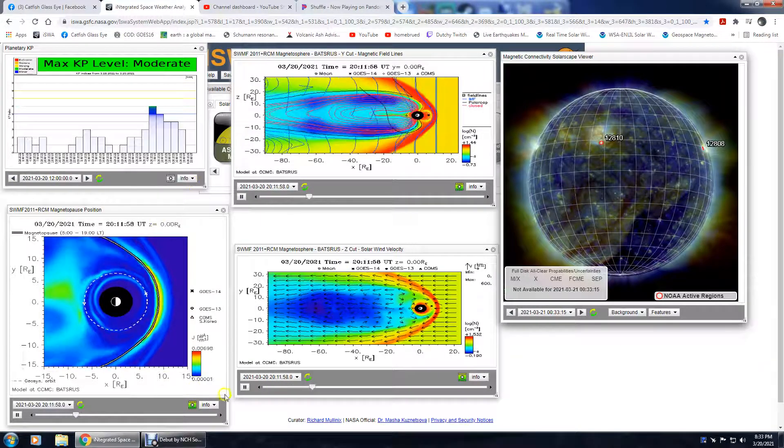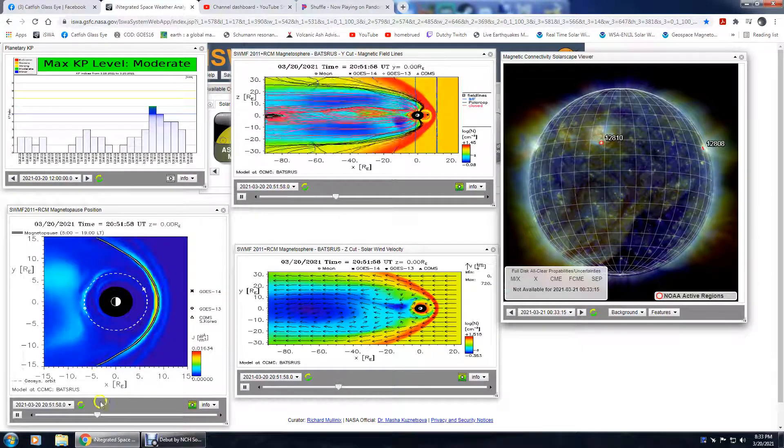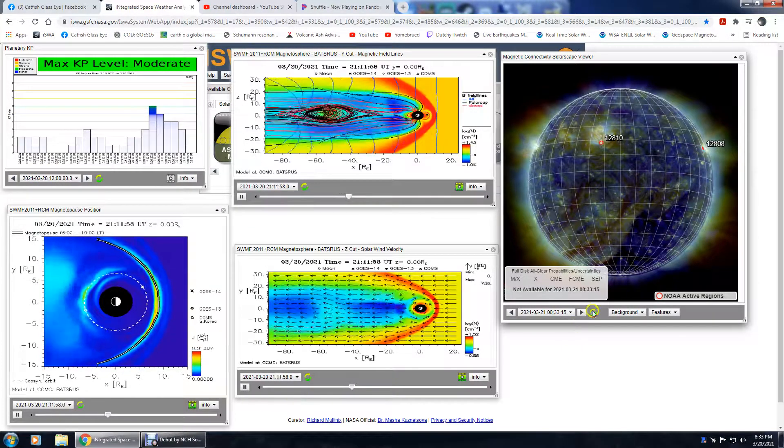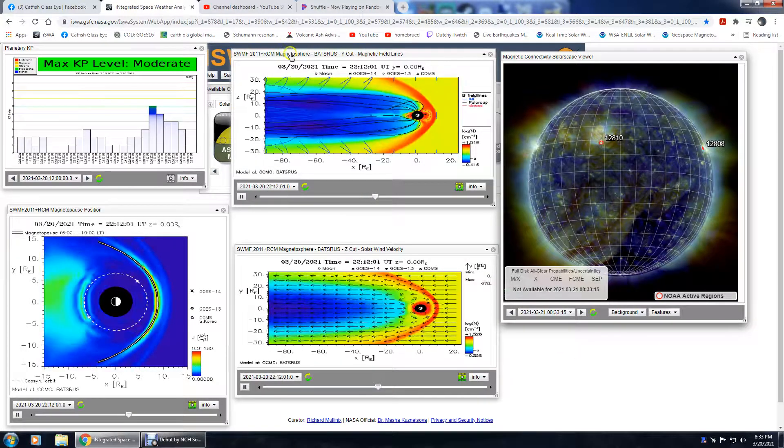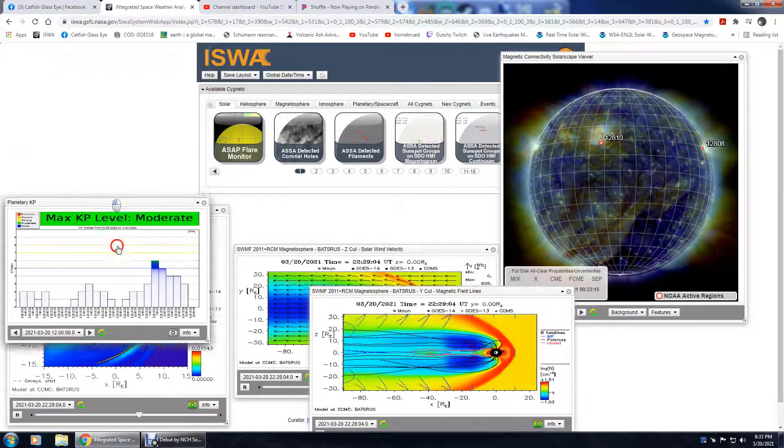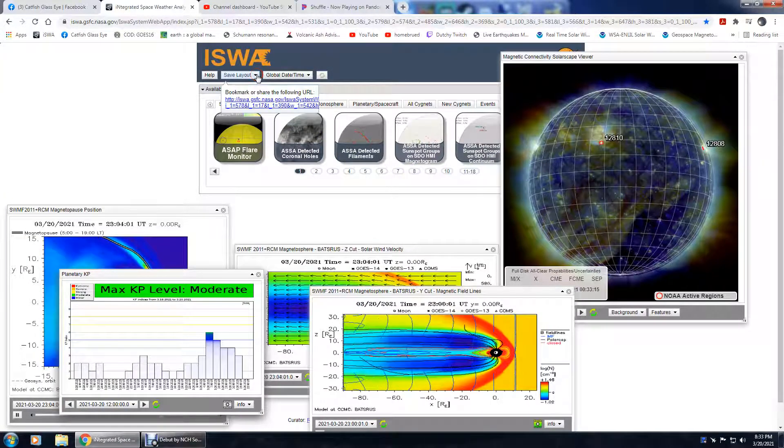And they're all up to date. As you can see, all arrows are green circling arrows. That means they're up to date. Okay, so to do that, you've set up how you want it, and just come here to save layout.